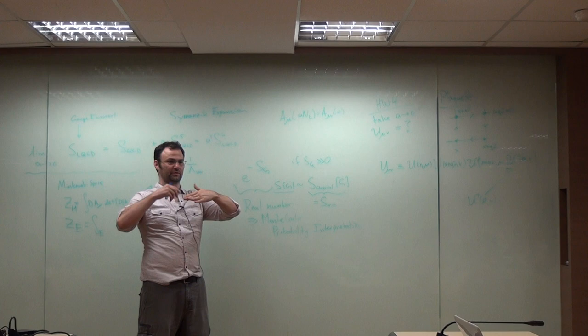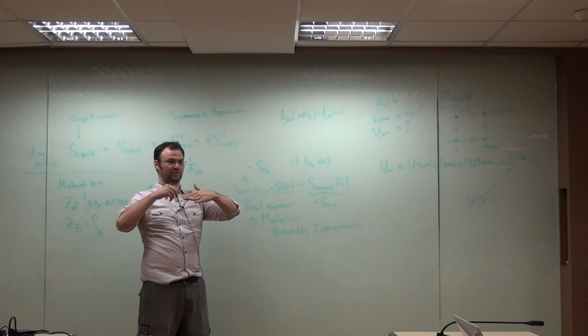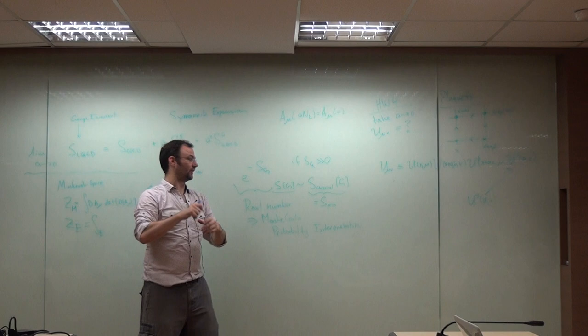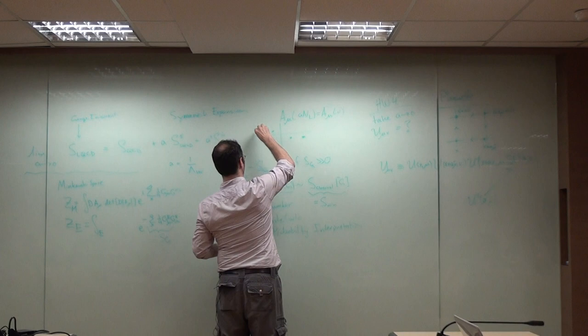No, all you need is if there's no poles in between the rotation, right? So, the only thing you need is all the poles of your theory live like this. You don't need the boundary conditions.